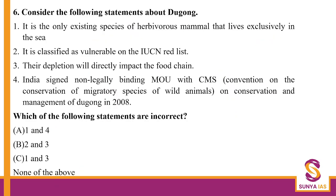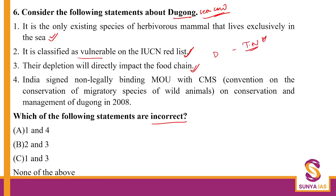Then, Dugong — again an important question asking which is incorrect. Statement: it is the only existing species of herbivorous mammal that lives exclusively in the sea — yes, true. Classified as vulnerable. The depletion will directly impact the food chain. Also remember from the lecture, India's Dugong Conservation Reserve is going to be set up in Tamil Nadu — that's a current affairs aspect. We have signed a non-legally binding MOU on the conservation of Dugong. All statements are correct, so the answer is D — none is incorrect.